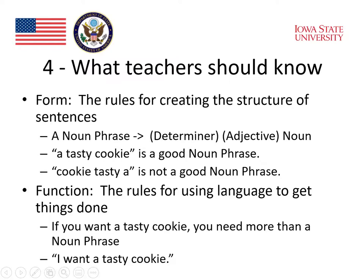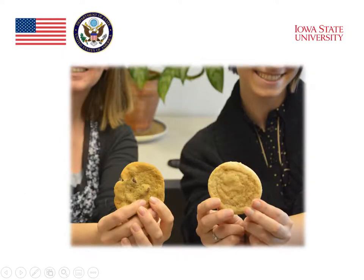Function, in contrast, refers to the rules for using language to get things done. If you want a tasty cookie, you need more than a noun phrase — you need to be able to say 'I want a tasty cookie.' You also need to say it at the right time, in the right place, to the right person, in order to make the function of that sentence actually get you a cookie. That's the function of language — its ability to get things done.